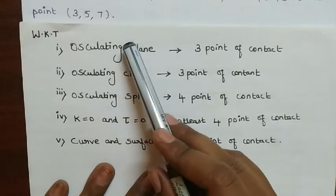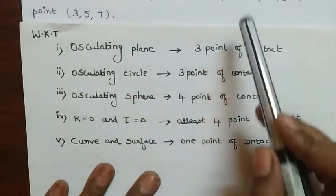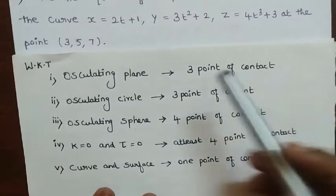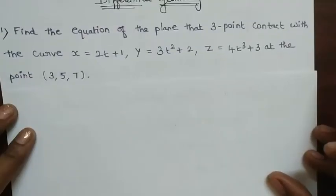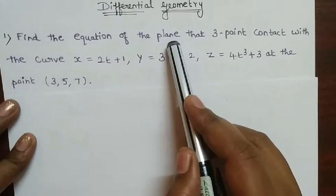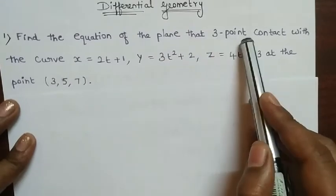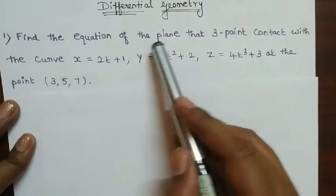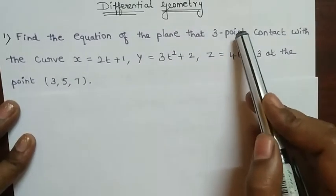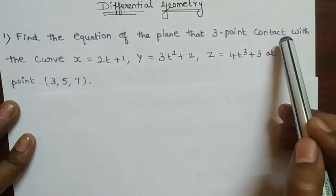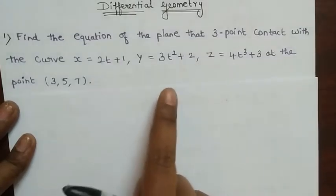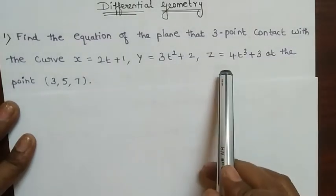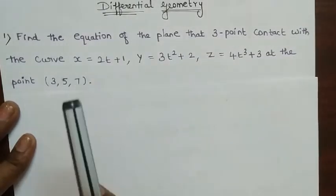Now keep in mind the result regarding this problem. They are asked to find the equation of the plane that has 3-point contact. The equation of the plane with 3-point contact means we want to find the equation of the osculating plane.